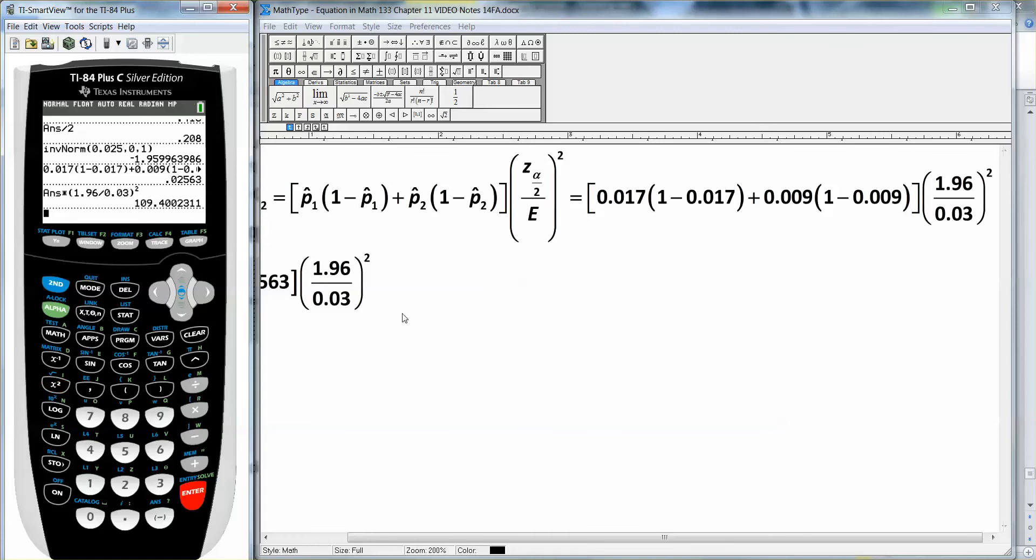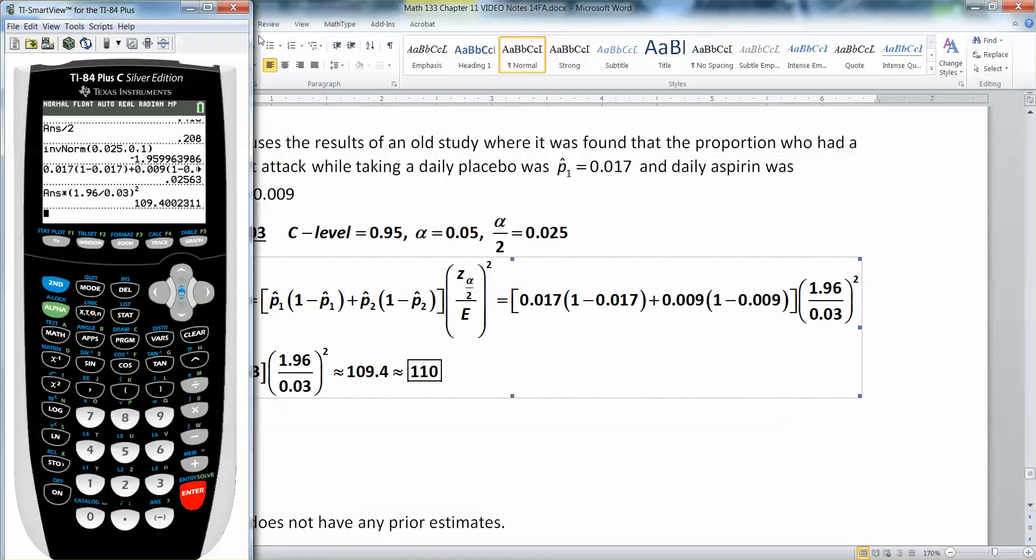Alright, so now I'm going to multiply that by parentheses 1.96 divided by 0.03, close my parentheses, squared, and I get 109.4. And since we must round up, no matter what, this is 110. And there we have it.